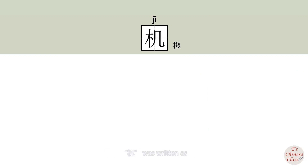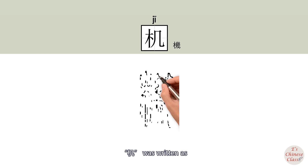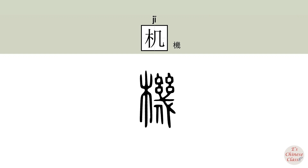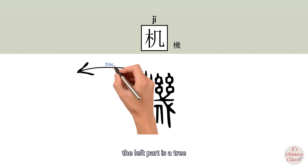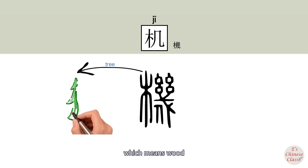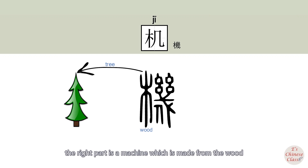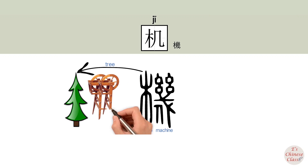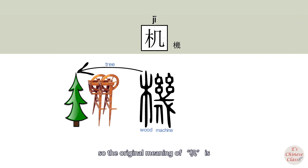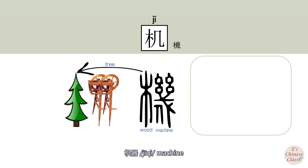In ancient Chinese, 机 was written with two parts: the left part is tree, which means wood, and the right part is a machine which is made from the wood. So the original meaning of 机 is 机器 — machine.